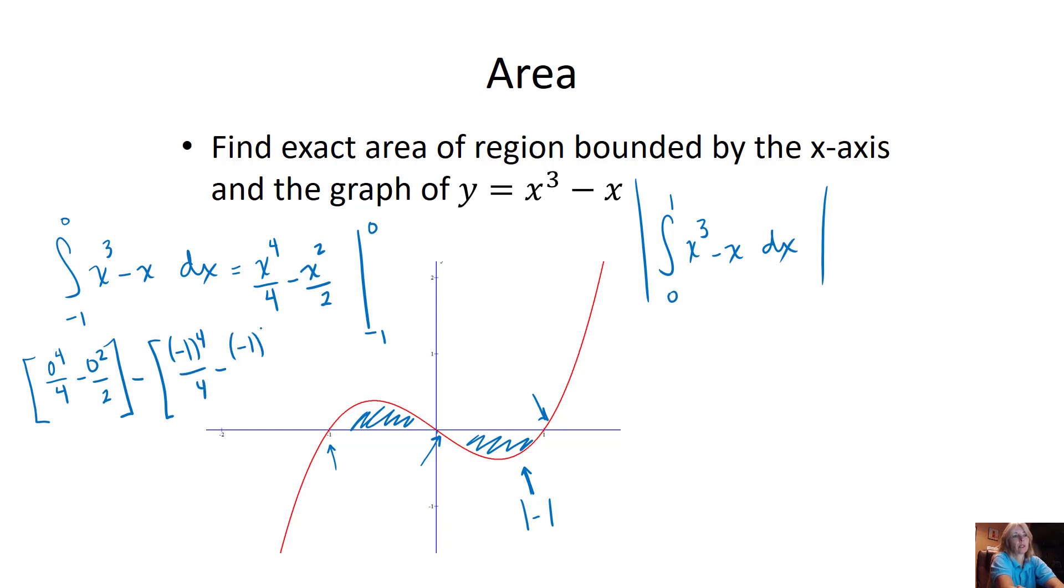So I'm going to plug in the 0, 0 minus - now I'm going to plug in negative 1 over 4 minus negative 1 squared over 2. If you didn't plug the 0 in, you might lose that negative sign and you'd know it because you'd get a negative answer. And so I have that negative out front. This is just going to become 1/4 minus 1/2, which I can change to 2 over 4. So this becomes the negative of negative 1/4, which is just simply 1/4.